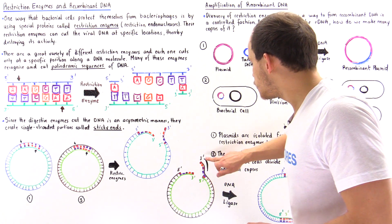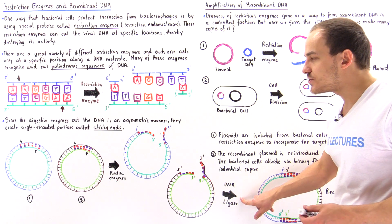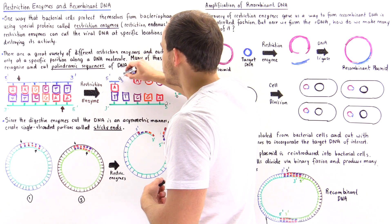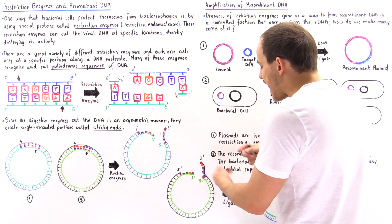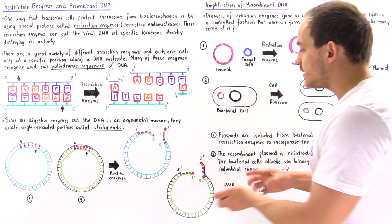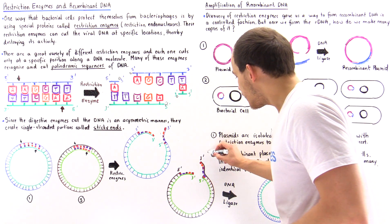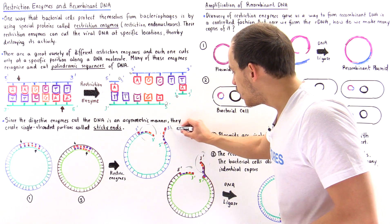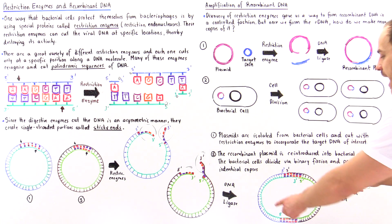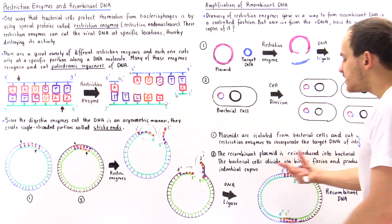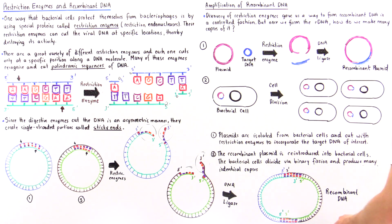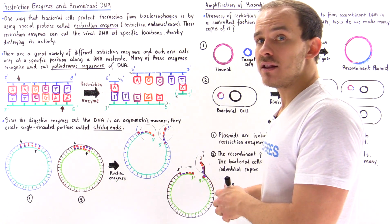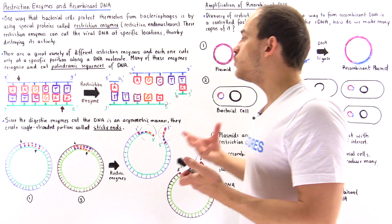If we take a special enzyme known as DNA ligase — which is able to reform these bonds between the complementary sections — and add DNA ligase into the mixture, what happens is this entire section will be joined onto this complementary section, and this section will be joined onto this complementary section. At the end, we form a single recombinant DNA molecule that consists of DNA sequences that ultimately came from two different sources.